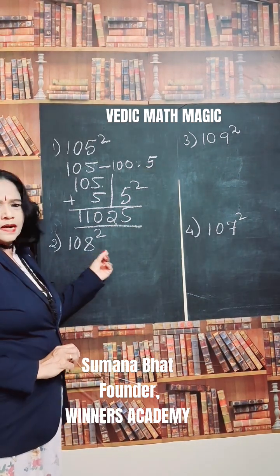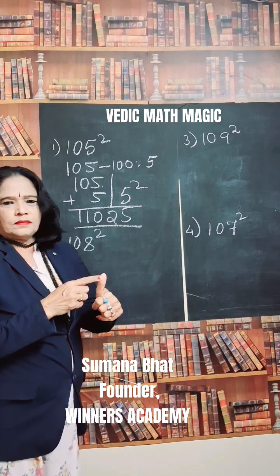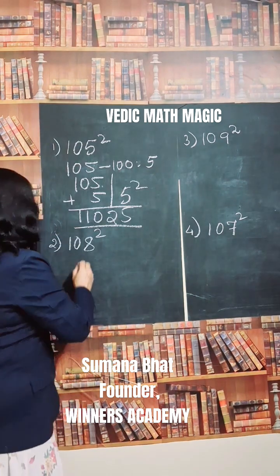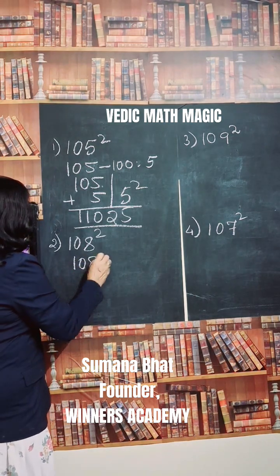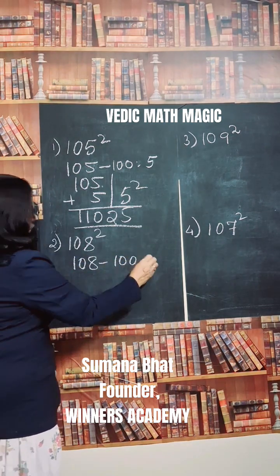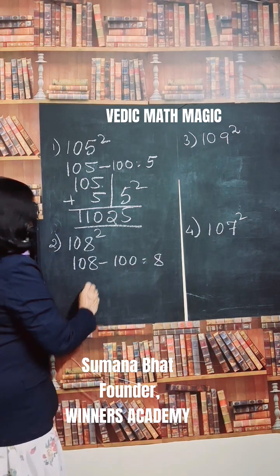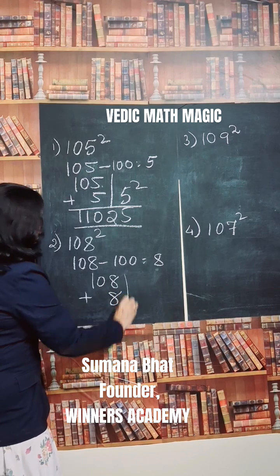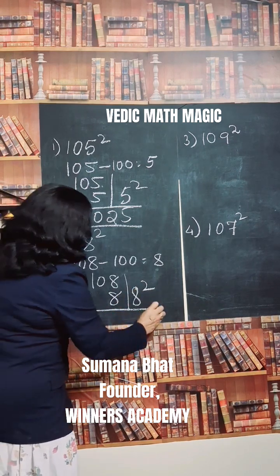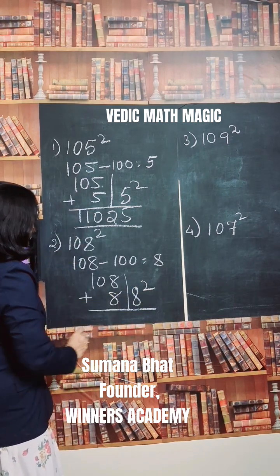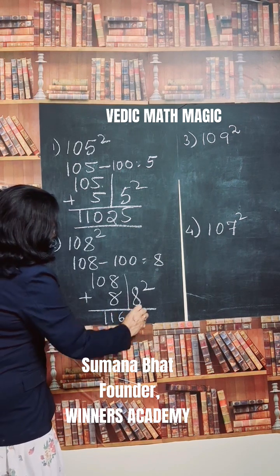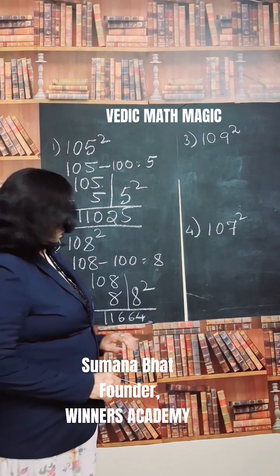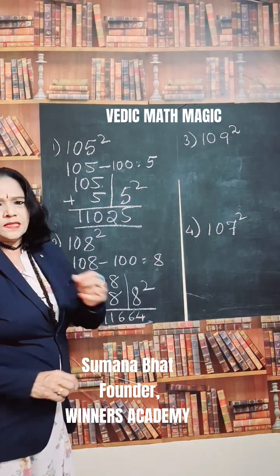Second example: one hundred and eight squared. Find the difference: 108 minus 100, the difference is 8. Add the difference: 108 plus 8 is 116. Square the difference: 8 squared is 64. So the answer is 11664.